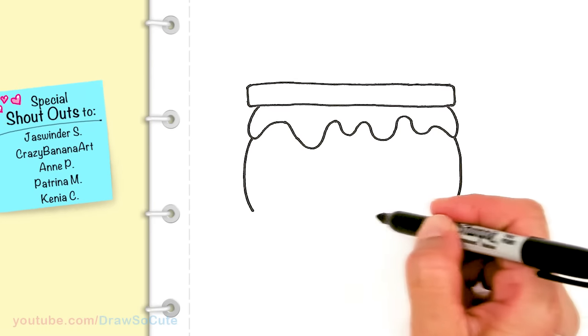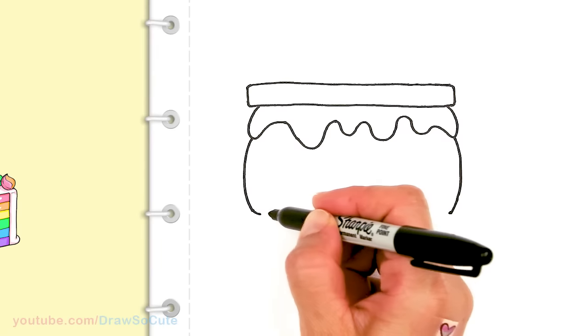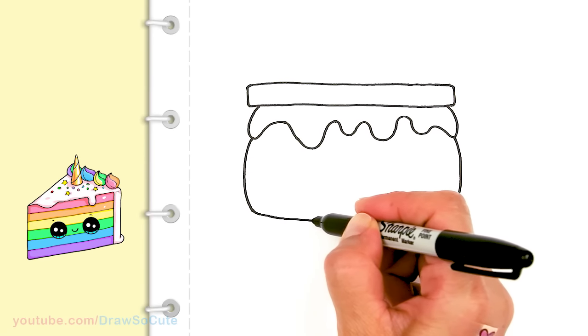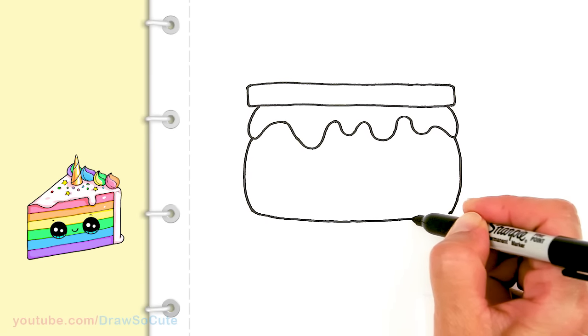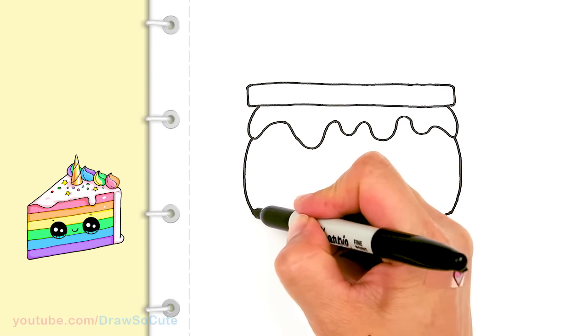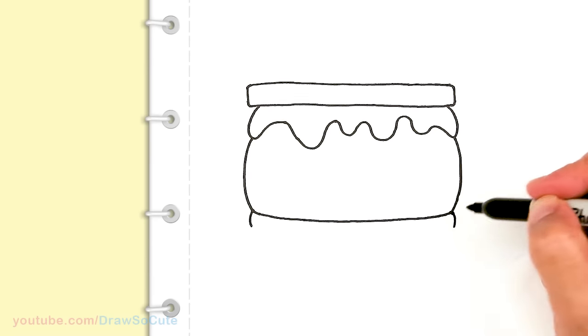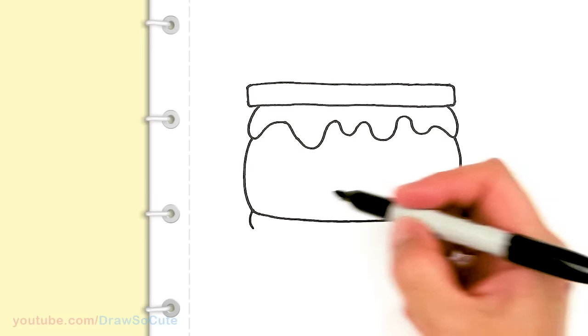And then I'm just going to go ahead and connect it. Soft curve and then connect it all the way across. And then now let's draw another layer of chocolate. Why not, right?